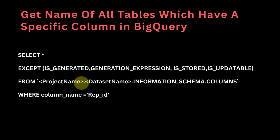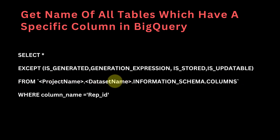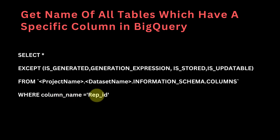In the next line of code I have FROM, and here you put the project name followed by dot, dataset name, and then dot INFORMATION_SCHEMA.COLUMNS. This is where all the table names are coming from. Depending on what your project name and dataset name are, you will need to update and customize this line of code.